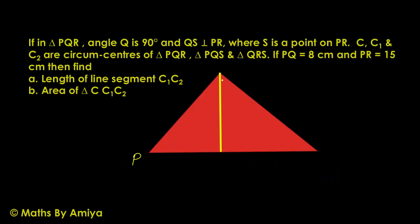We know according to data, PQR is one of the triangles and Q is 90 degrees. So we have one right angle triangle PQR and QS is perpendicular on PR, so we have three right angle triangles. C is the circumcenter of PQR, and since PQR is a right angle triangle, the circumcenter is the midpoint of hypotenuse.